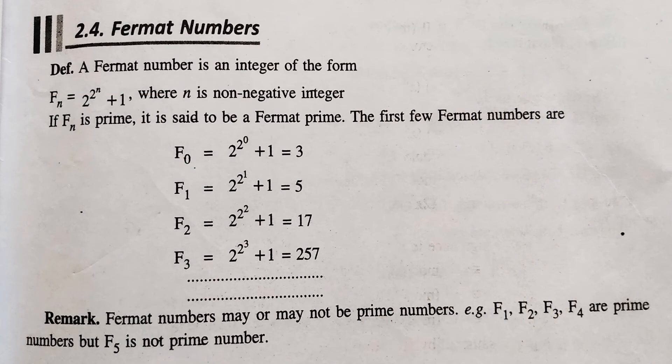We have a definition of Fermat Number. A Fermat Number is an integer of the form 2 raised to power 2 raised to power n plus 1. It is a Fermat Number. Any number of this type is called Fermat Number where n is a non-negative integer.